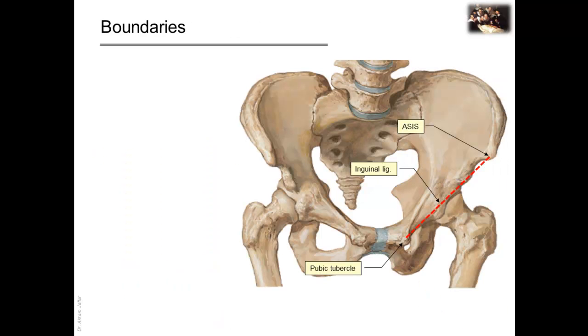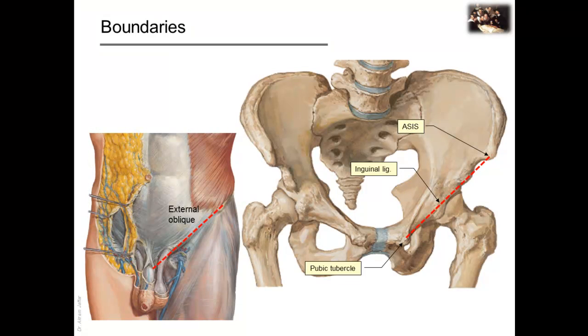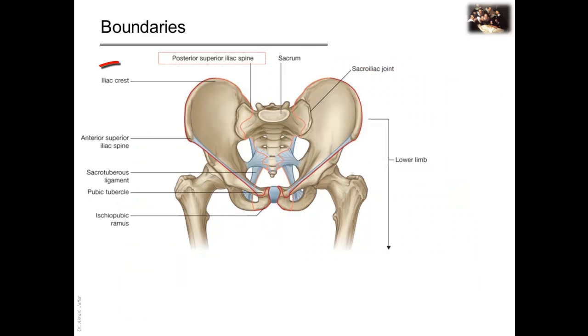The lower limb is separated from the abdomen, back, and perineum by a continuous line which joins the pubic tubercle with the anterior superior iliac spine. Both are palpable surface anatomical landmarks, which you can feel on your body. They denote the extent of the inguinal ligament, which is in fact the lower free border of the aponeurosis of the external oblique muscle in the anterolateral abdominal wall. The boundary line then continues along the iliac crest to the posterior superior iliac spine to separate the lower limb from the anterior and lateral abdominal walls.